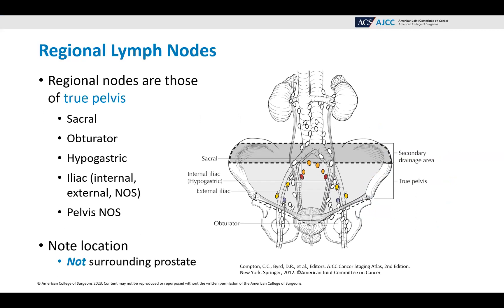The regional lymph nodes are those of the true pelvis, as you can see by the diagram: the sacral, obturator, hypogastric, iliac — including internal and external and NOS — and pelvic NOS. Note the location; this is very important. These lymph nodes are not surrounding the prostate, so don't be confused and think that regional lymph nodes are always surrounding the organ or tissue you're talking about.